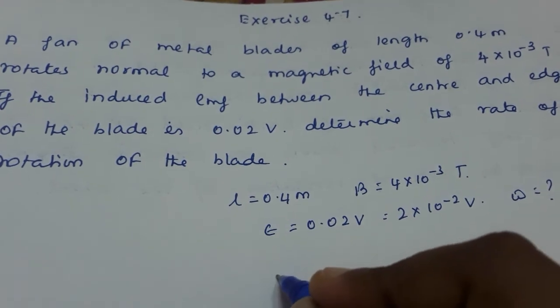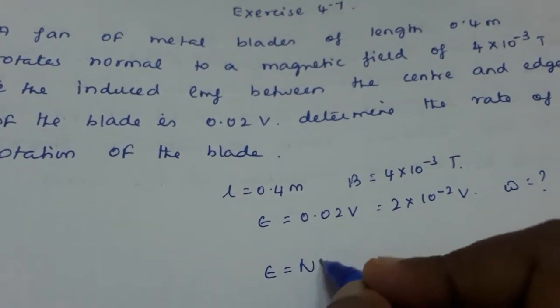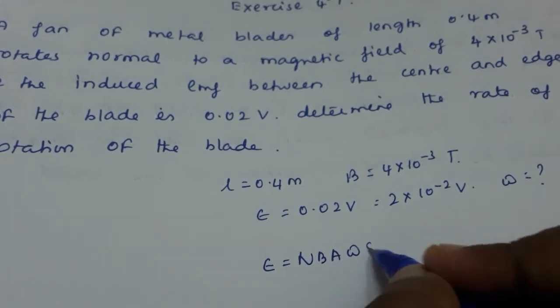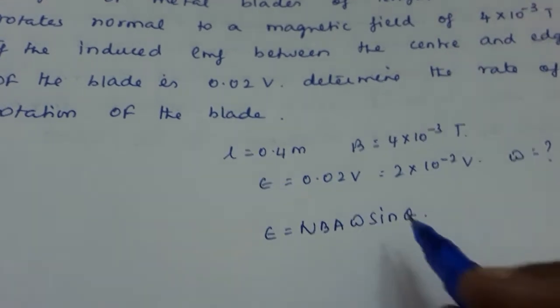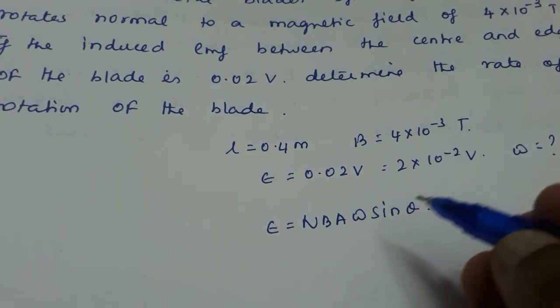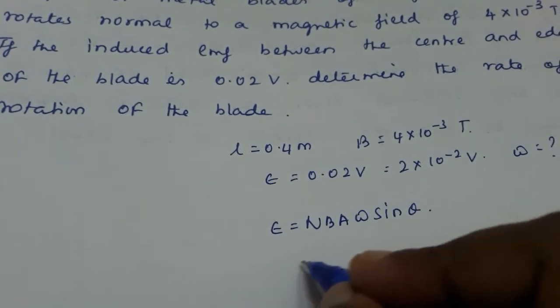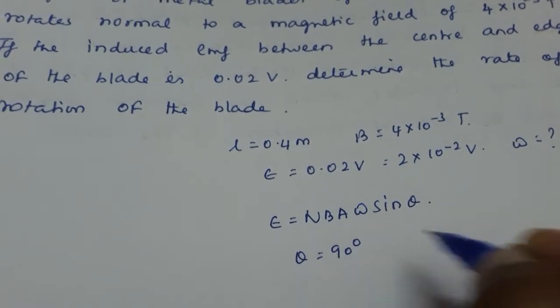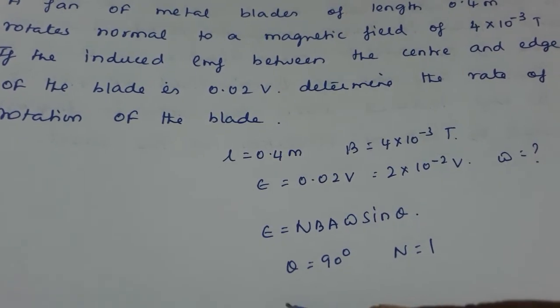We can write the formula of induced EMF as NbA omega sin theta. Epsilon is equal to NbA omega into sin theta. What is theta? Theta is equal to 90 degrees, and the number of turns is 1.